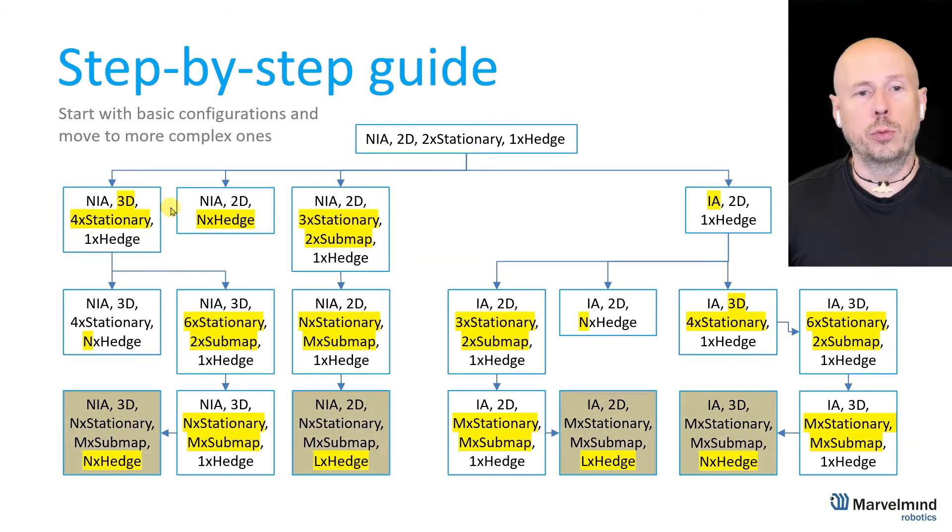Other path, let's say from basic non-inverse architecture to more complex non-inverse architecture with several sub maps and then let's say to eventually multiple sub maps, multiple mobile beacons and multiple stationary still 2D that would be your this path. Then the same but non-inverse architecture in 3D so it will be the same, one step less than compared to inverse architecture because non-inverse architecture is simpler.